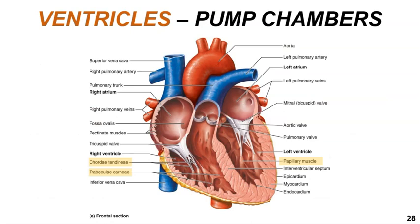The ventricles are referred to as the pumping chambers because they are responsible for pushing blood into the body's arteries. The walls of the ventricles are much thicker and more muscular than the atria because the ventricles must push blood further. The first notable feature lining the ventricle walls is the trabeculae carneae — meaning the crossbars of flesh — which function to reduce the suction created when the ventricles contract. The second feature is the papillary muscles, which control the tricuspid and the bicuspid valves.